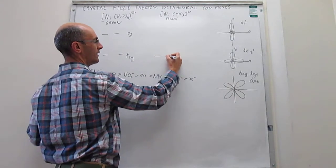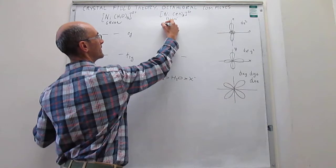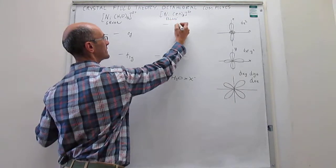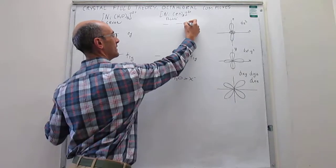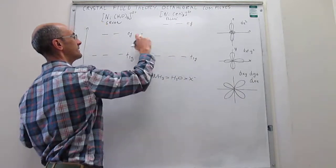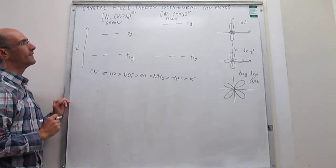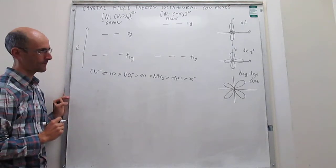When we draw the orbital diagram for the tris-ethylenediamine complex for that nickel, what you will actually have is that that gap has to be larger than in the case of the hexa-aqua complex.